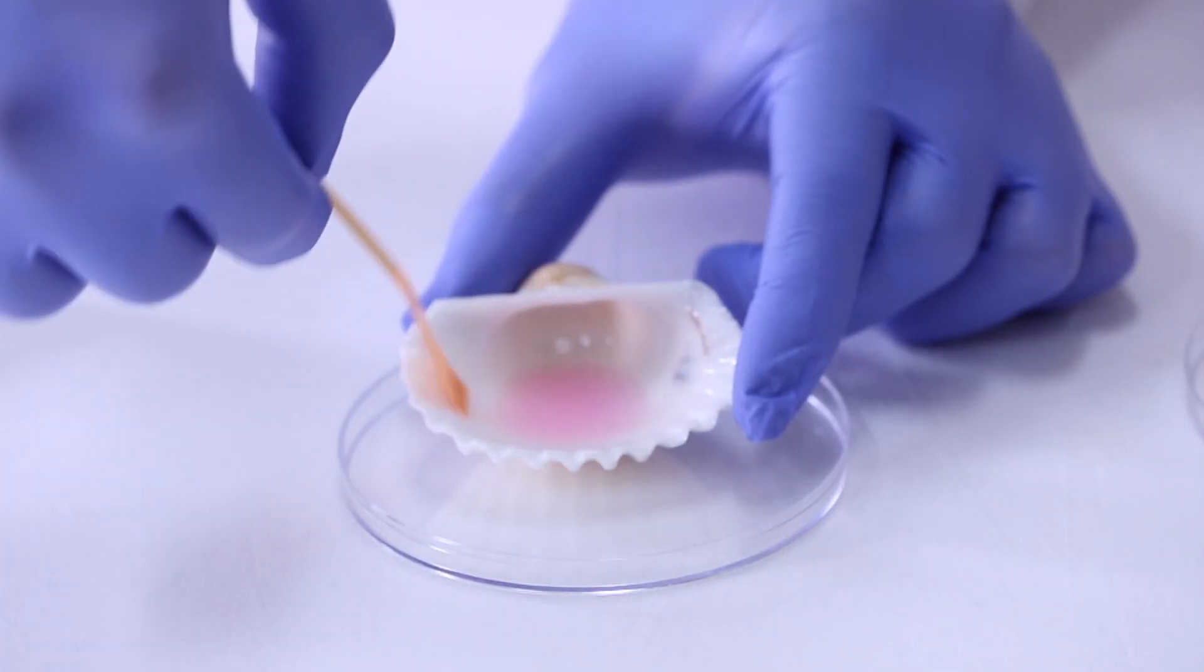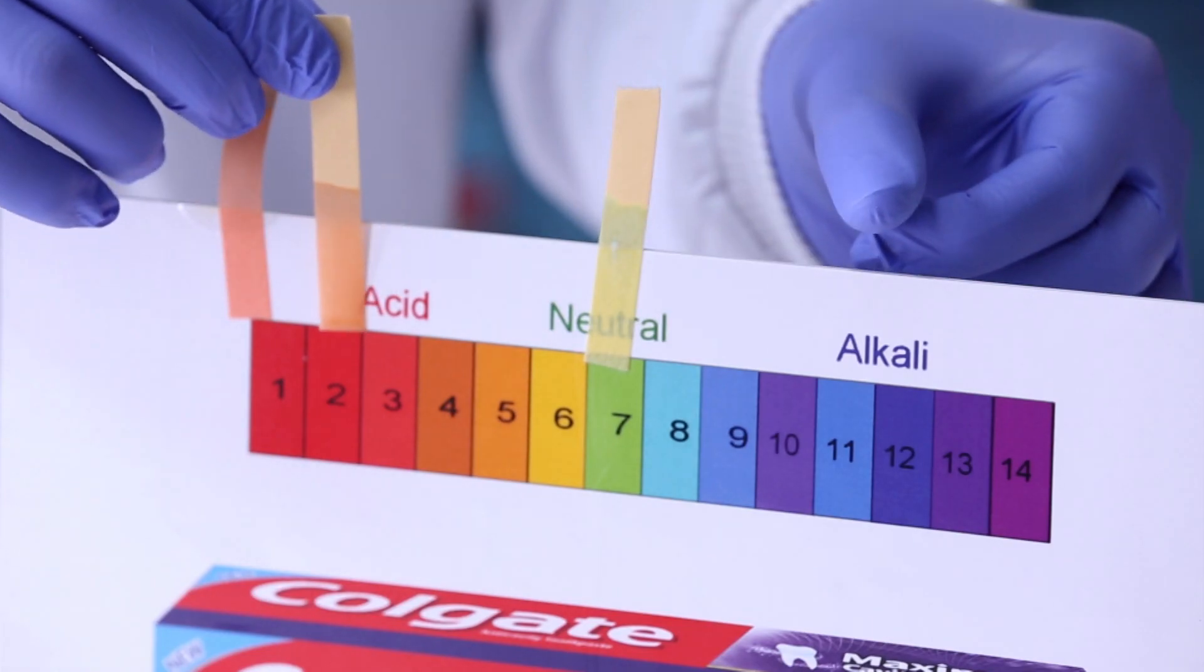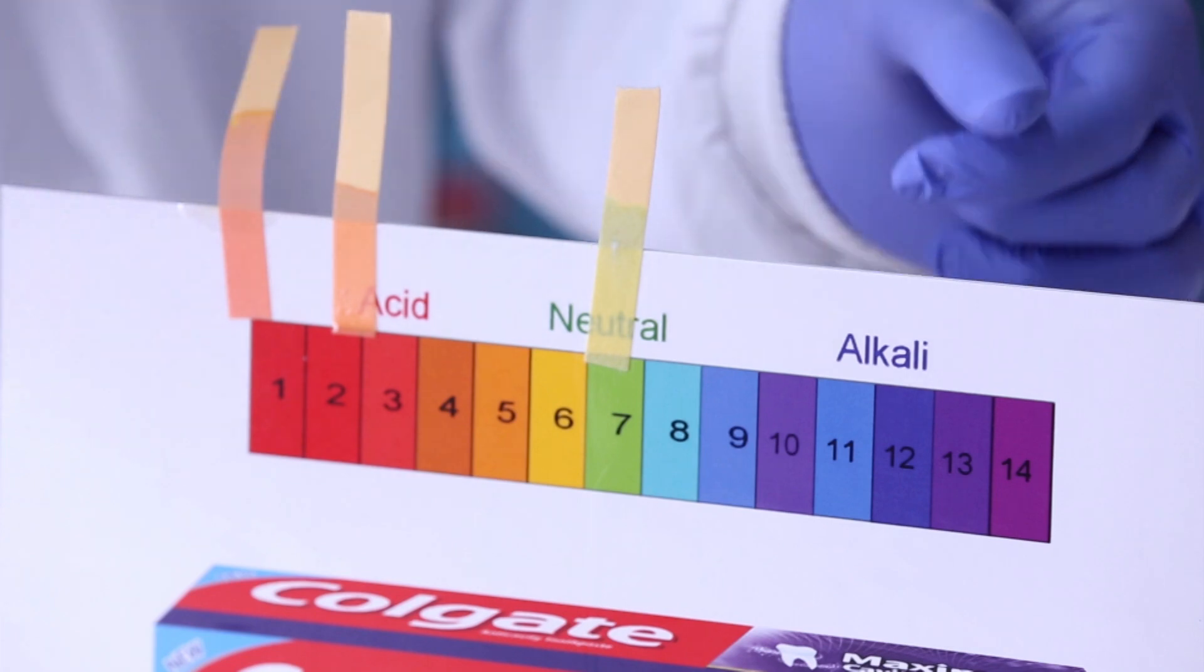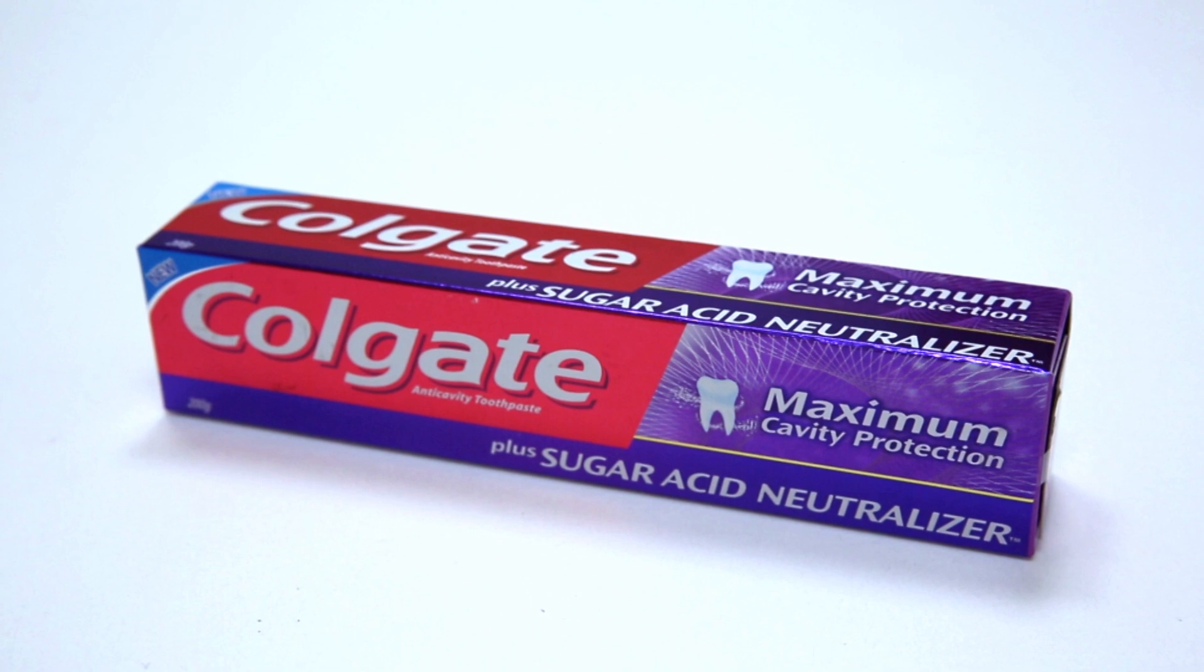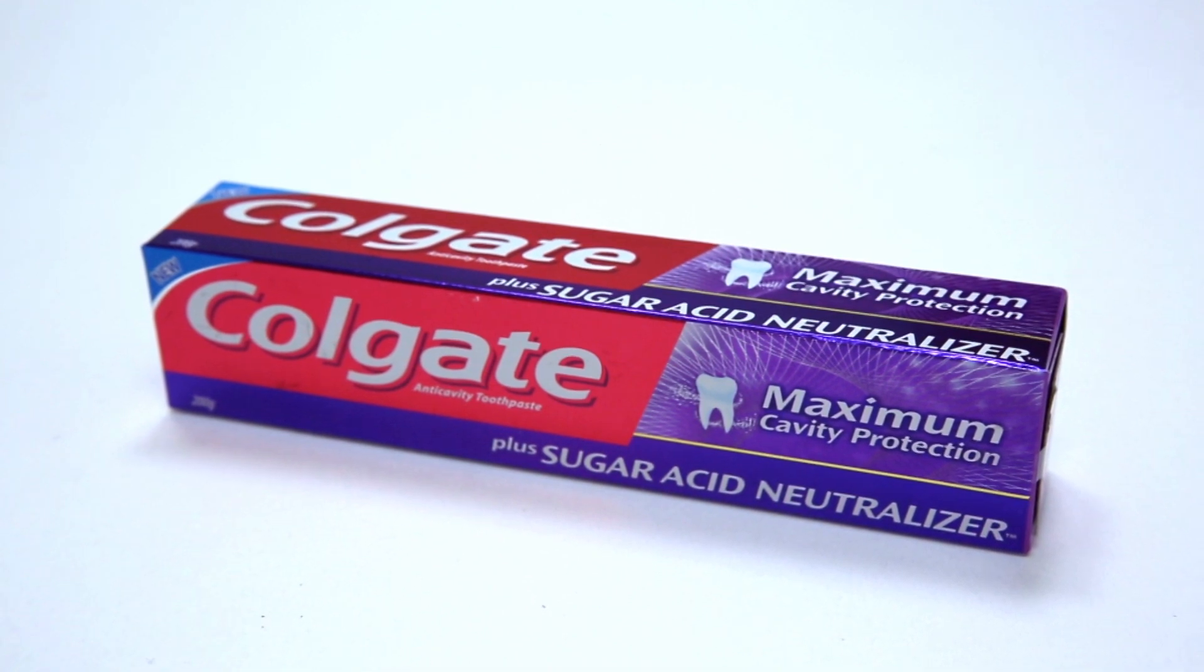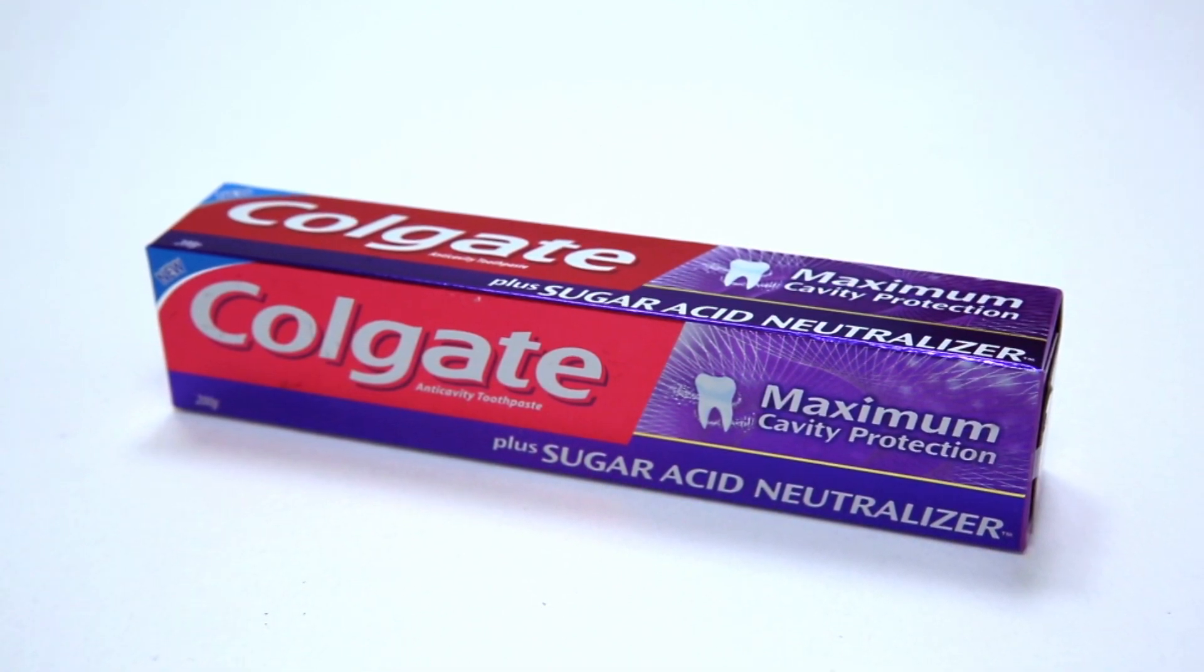We will now use pH paper to confirm it. Red confirms that sugar acid has not been neutralized. This clearly shows that Colgate Maximum Cavity Protection Plus Sugar Acid Neutralizer neutralizes sugar acids to help prevent cavities.